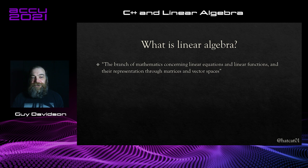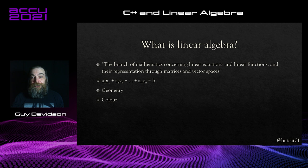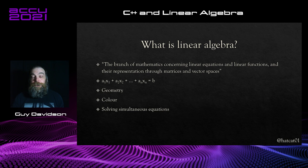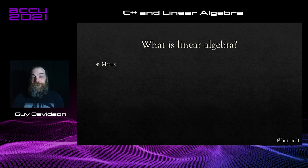Linear algebra is the branch of mathematics concerning linear equations and linear functions, and their representation through matrices and vector spaces. A linear equation is the sum of some products of coefficients and unknowns, and it has application to geometry for modelling the Cartesian representation of space. Colour is typically represented as a triple of values, and there are useful things you can do when manipulating colour spaces. Solving simultaneous equations is probably the first piece of linear algebra any of you did, via row reduction. In fact, linear algebra underpins most modern mathematics. It has applications in machine learning, which is just number crunching.